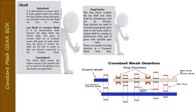Next is the dog clutch. The dog clutch couples the lay shaft and main shaft by interference and not by friction. It is used to transmit the appropriate gear ratio — whether first, second, or third gear — to the main shaft or output shaft. There are usually two dog clutches in the constant mesh gearbox.